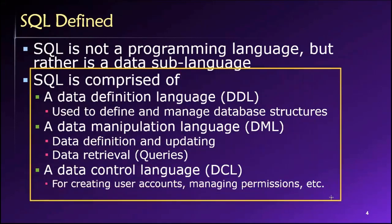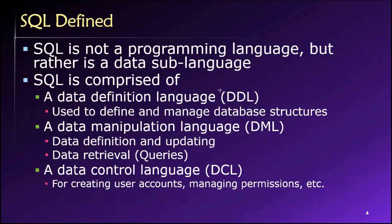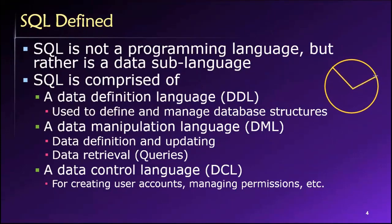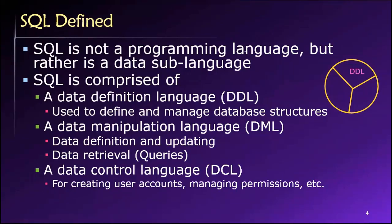The structured query language can be understood as consisting of three different parts — think of it like a pie chart divided into wedges. The first part is the DDL, or Data Definition Language. This contains the set of SQL commands we use to define the structure of our database: things like tables, relationships, attributes, data types, and constraints.